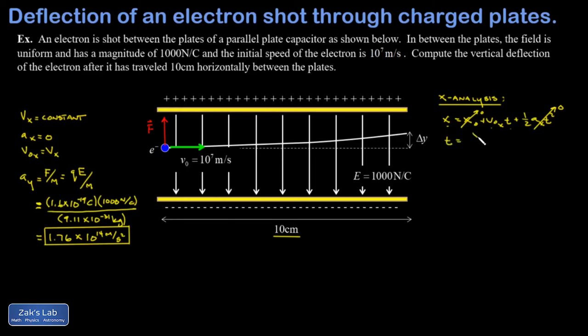And really what I'm looking at is distance equals rate times time, and I'm trying to find time. That's going to be my final x position divided by my x velocity, and so I get 10 centimeters, or 0.1 meters, divided by 10 to the seventh meters per second.